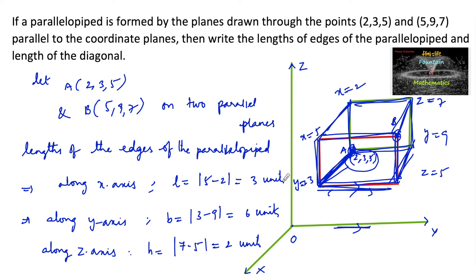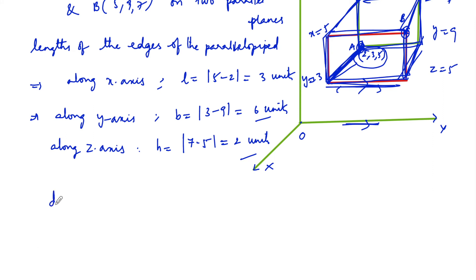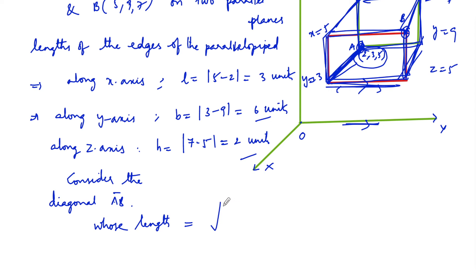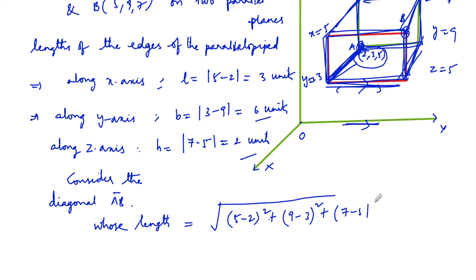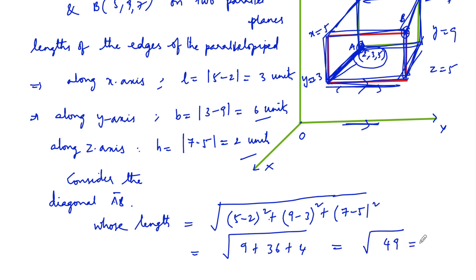The lengths of the edges of the parallelepiped are 3 units, 6 units, and 2 units. Now for the length of diagonal AB, using the distance formula: AB = √((5−2)² + (9−3)² + (7−5)²) = √(9 + 36 + 4) = √49 = 7 units.